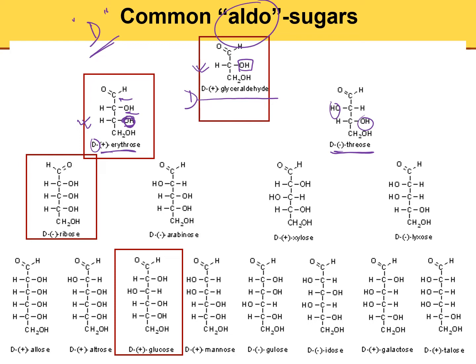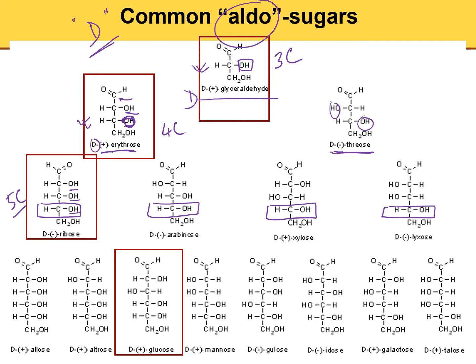For five-carbon sugars, you can have ribose, arabinose, xylose, and lyxose — they're all different based on the orientation of the OH groups, but all of them are D forms, so the last OH has to be on the right-hand side. I would strongly urge you to memorize ribose — that's the one you really want.